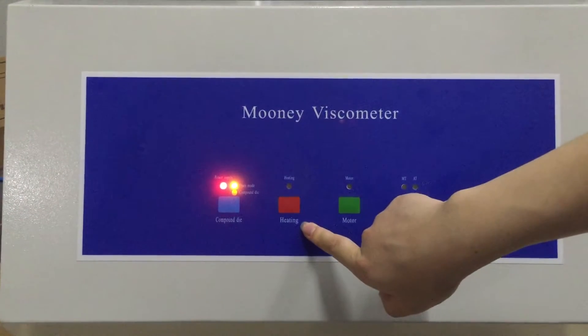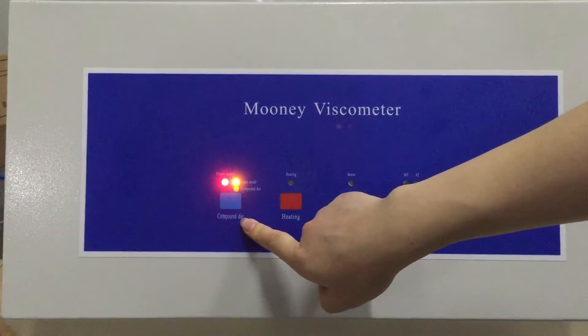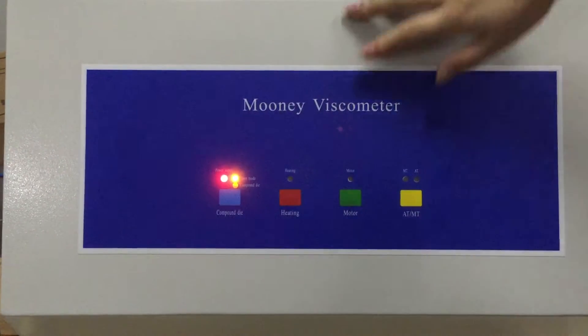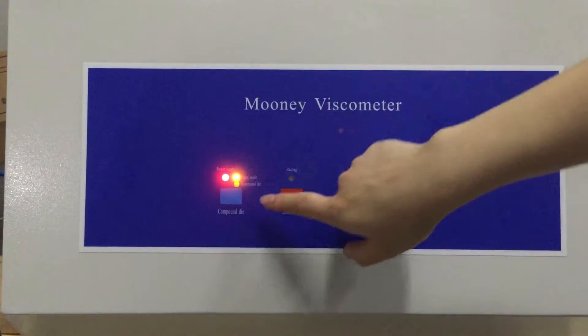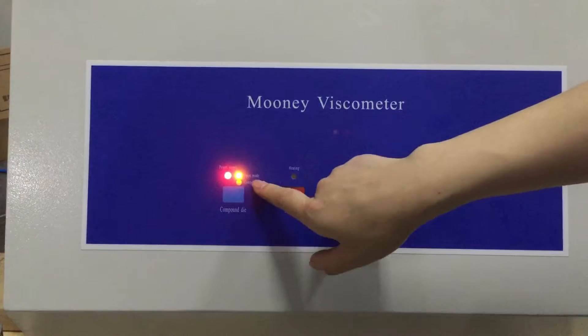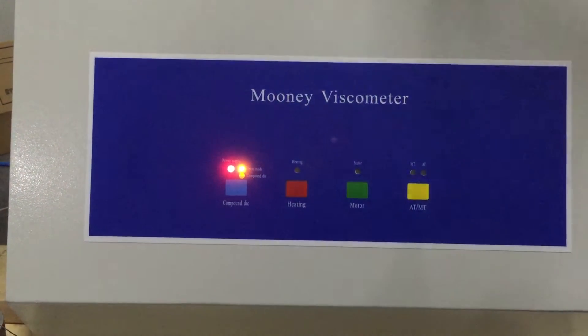And this is the heating switch. This switch is used to control the front door. Press the switch. We can see there is open mode, means the door is open.